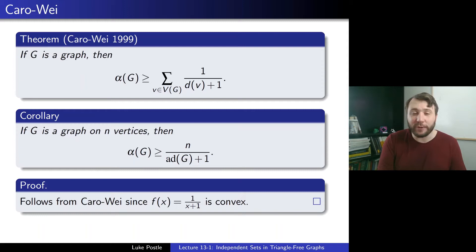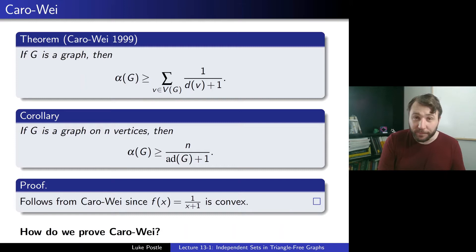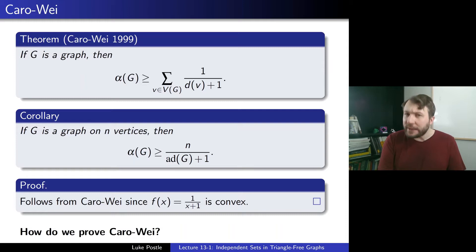That gives us the average degree version of the greedy independence bound, which follows from the Karo-Way version using actual degrees. Now how do we prove the Karo-Way theorem? There are a couple of different proofs — you could take a maximum degree vertex and delete it, or take a minimum degree vertex, delete it and its neighbors, and add back an independent set by induction. Both work, but instead I'm going to do a short probabilistic proof, as this is a probabilistic methods class.